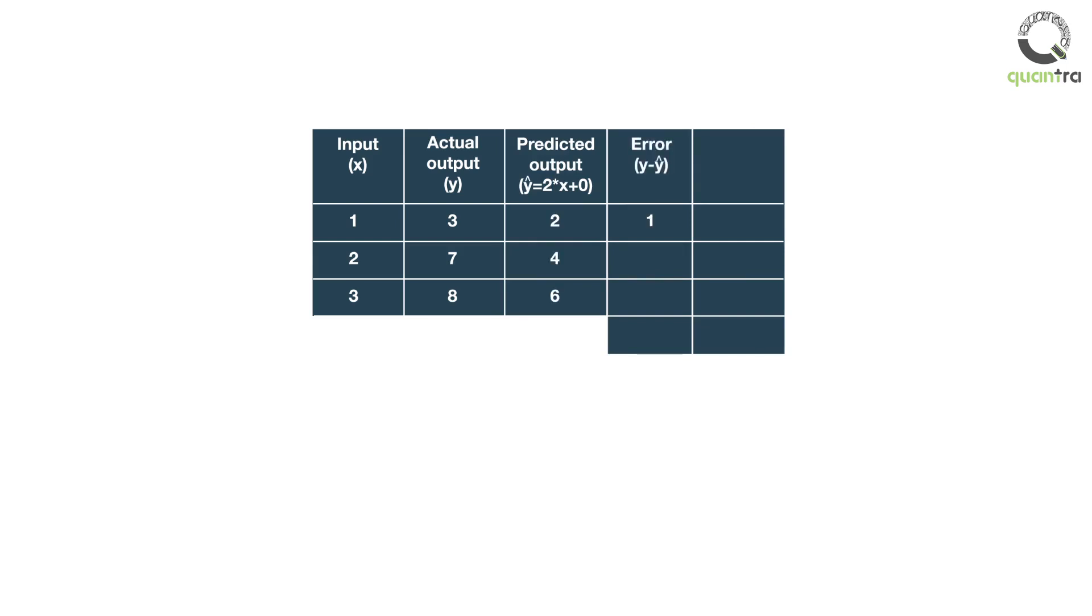And error is 1, 3, and 2, as shown in the table. This results in mean squared error of 4.66. We have used mean squared error as the loss function here.